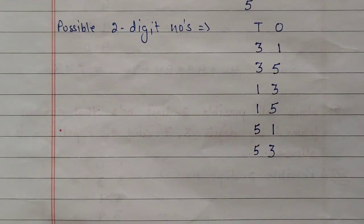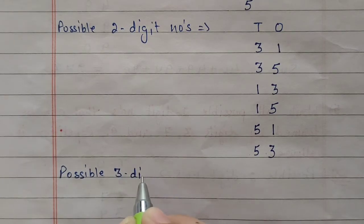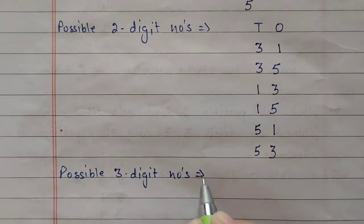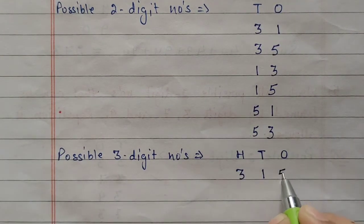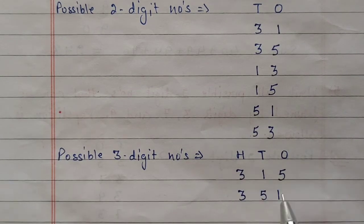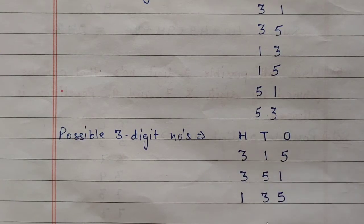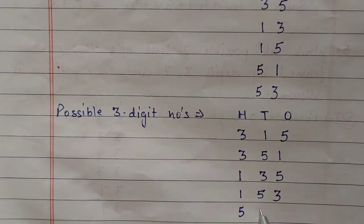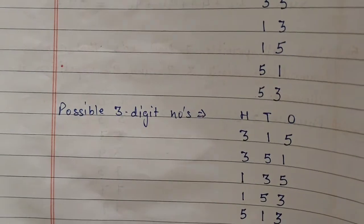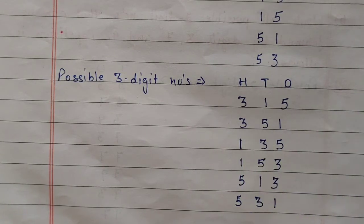Because 3 digits are given, we can also make 3-digit numbers. For 3-digit numbers we have hundreds, tens, and ones place. If hundreds is 3, remaining places are 1 and 5 or 5 and 1. If hundreds is 1, we can fill with 3 and 5 or 5 and 3. If hundreds is 5, we can fill with 1 and 3 or 3 and 1. Because repetition is not allowed we cannot use the same digit. So these are all possible 1-digit, 2-digit, and 3-digit numbers formed by 3, 1, and 5.